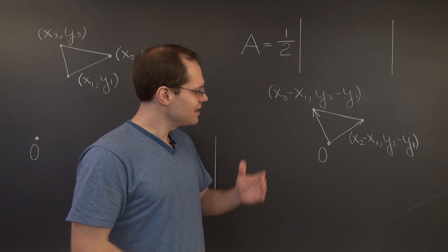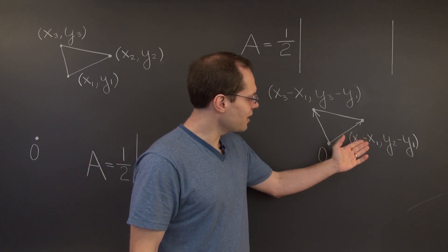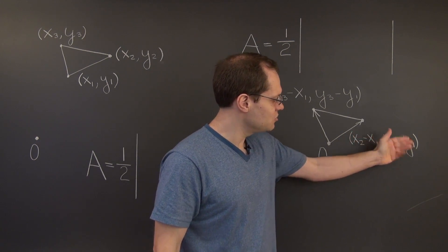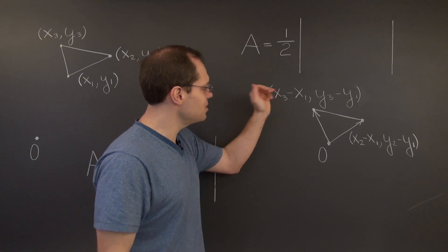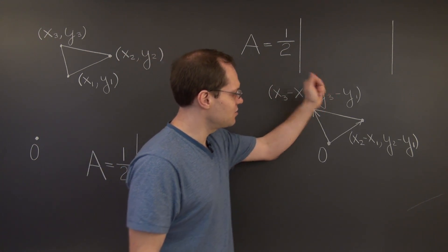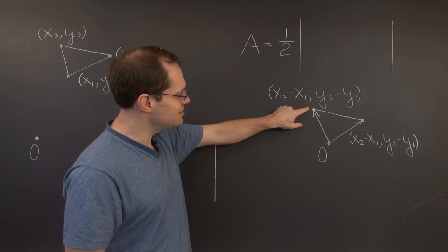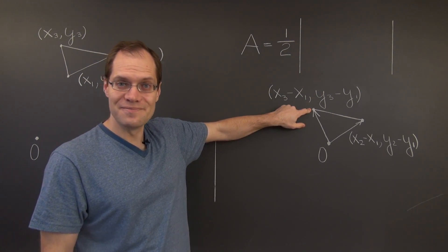And, I think you would agree with me, that their components are x2 minus x1 and y2 minus y1, that's the components of this one right here. And this one will be x3 minus x1 and y3 minus y1, and that's the components of this vector right here.